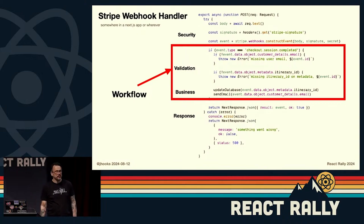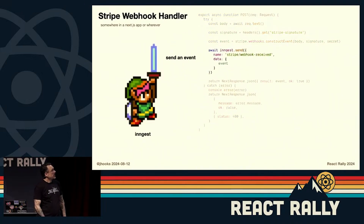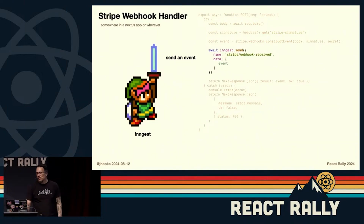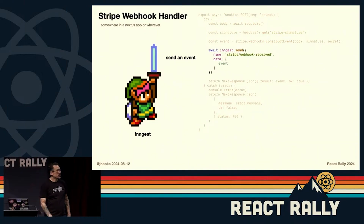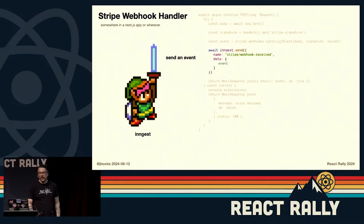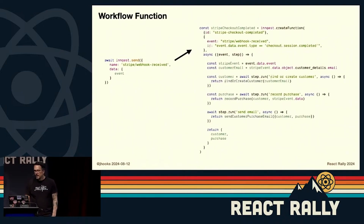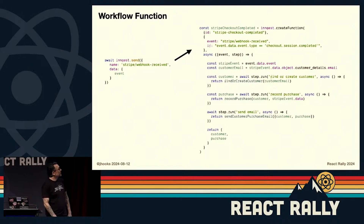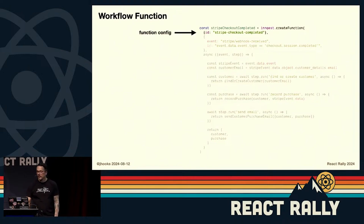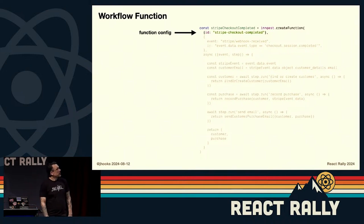When I send this out, I can have as many functions effectively listening for this particular event across my system. Anybody that needs to know a webhook was received can respond to it. In Inngest, this is a function like before — we configure it and give it an ID.